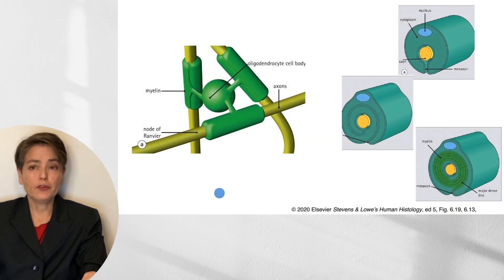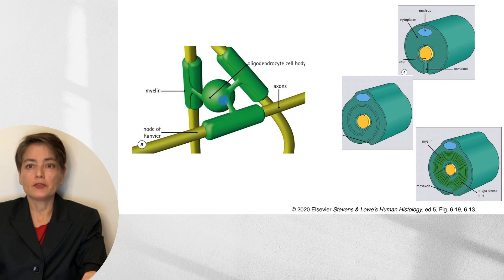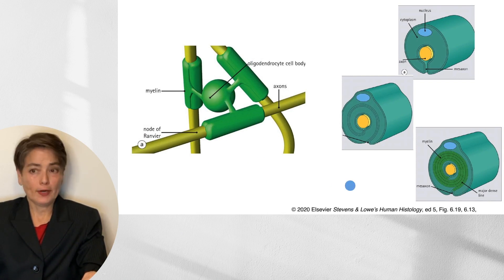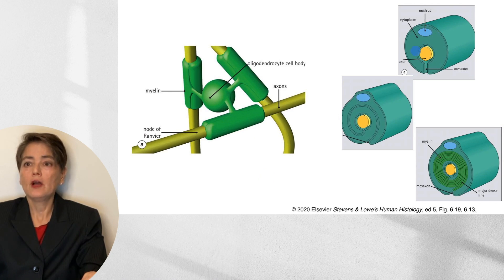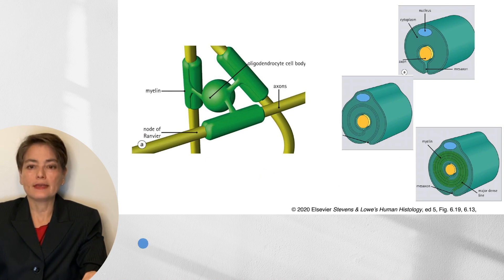Here are just two figures to remind you of how myelin is generated. Here in the central nervous system, you can see our oligodendrocyte, which is wrapping multiple axons. By contrast, here in the peripheral nervous system, we have our Schwann cell, which is wrapping around this one axon, causing that spiraling form that gives the insulation properties.